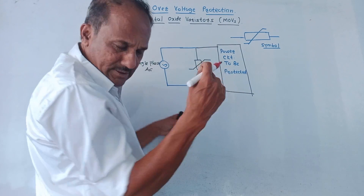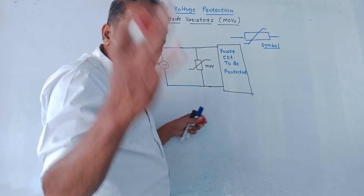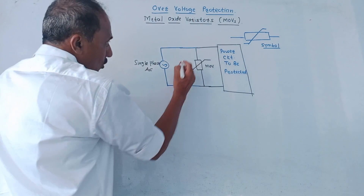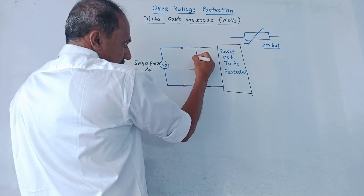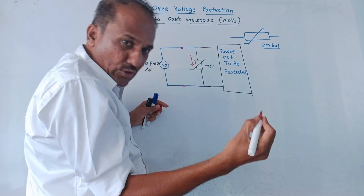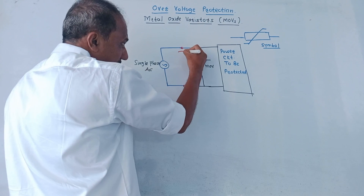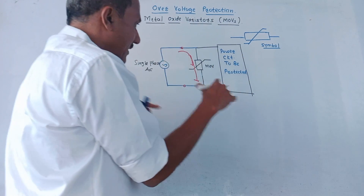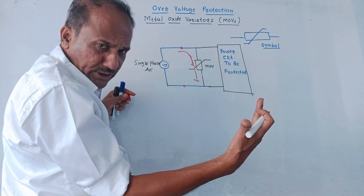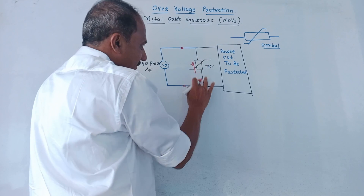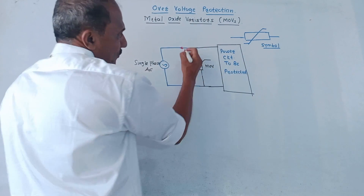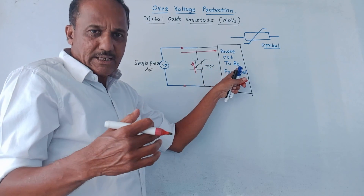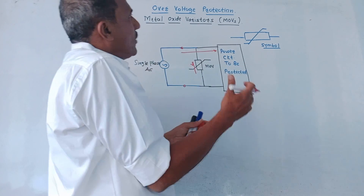Whenever there is a voltage spike from the input side, this device produces very low impedance, ideally zero resistance, because of which any voltage spike will pass through this device and will not pass through the power circuit, and the circuit will be protected. On the contrary, if there is normal operating voltage — not a voltage spike — then this device offers normal high resistance or high impedance, because of which the normal voltage will be passed to the device under consideration. This is the simple technique which provides overvoltage protection.